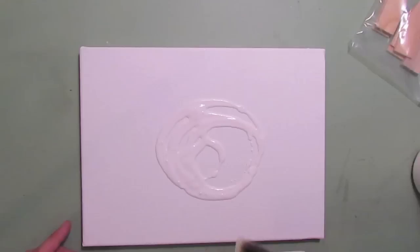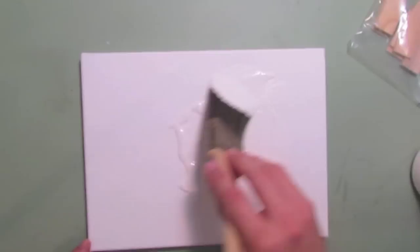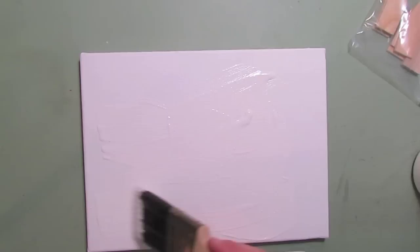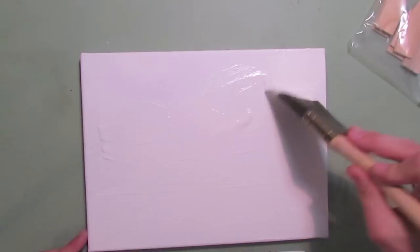Alright, so we're just going to pour this on. So there's no real special technique here. It's just really just get the gesso all over the canvas to start. Don't forget about the edges. I tend to forget them most of the time. We want to get the whole thing covered.